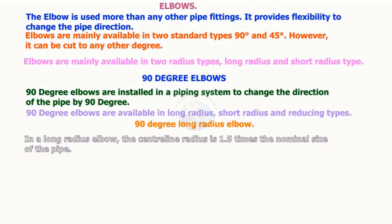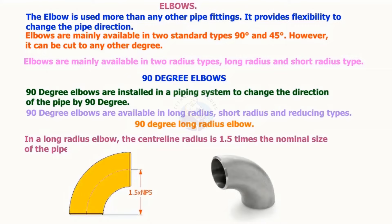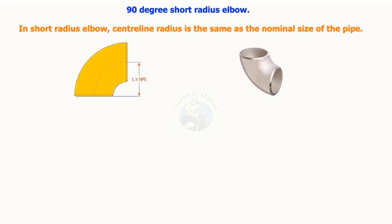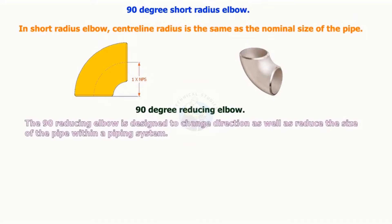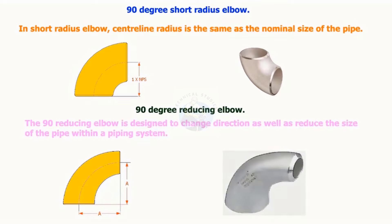In a long radius elbow, the centerline radius is 1.5 times the nominal size of the pipe. In a short radius elbow, the centerline radius is the same as the nominal size of the pipe. The 90-degree reducing elbow is designed to change direction as well as reduce the size of the pipe within a piping system.